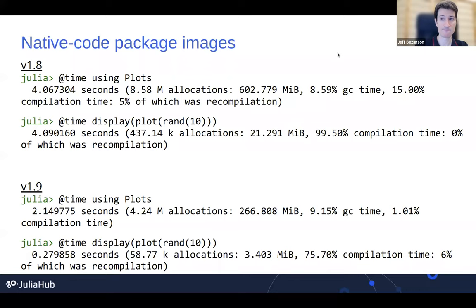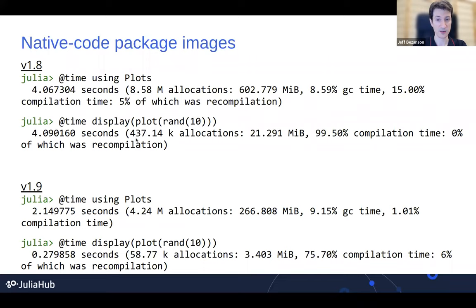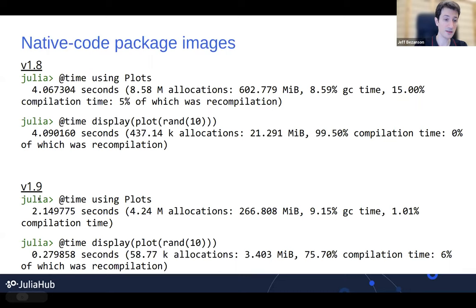For many people, this will be the most exciting and useful thing in the release. When you start up and after pre-compiling in 1.8, loading plots — our standard startup time benchmark — took four seconds to load the package, and four seconds to actually display the first plot. In 1.9, the using time is down to two seconds, and the time to the first plot is 0.2 seconds — an enormous speedup. The four seconds to two seconds improvement is basically just data structure and algorithm improvements, organizing the stuff in the packages better so it can be loaded more quickly.